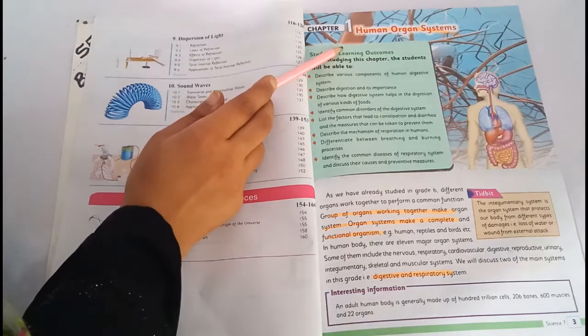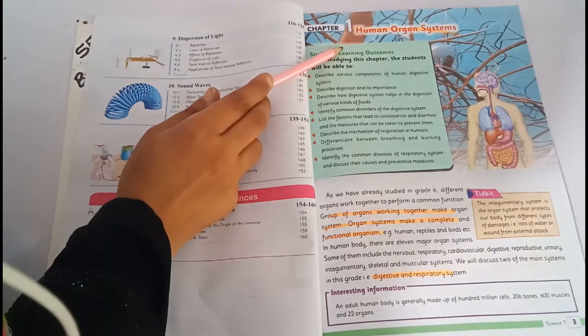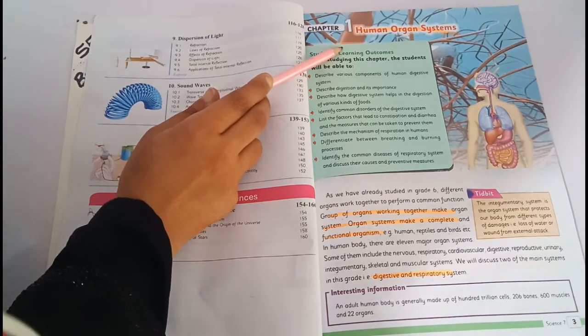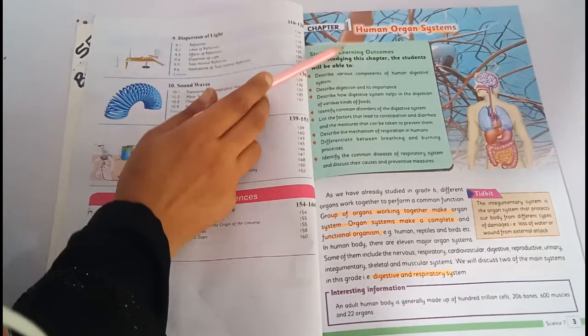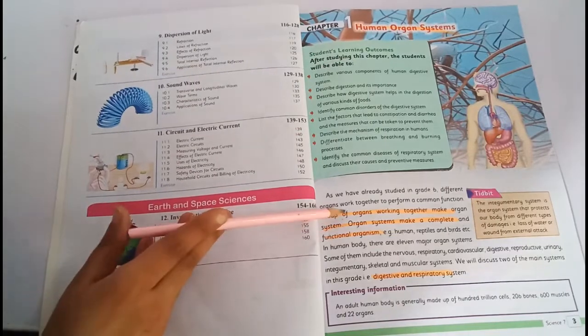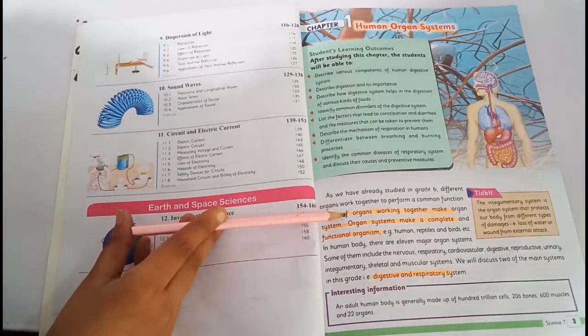In this chapter we will talk about organ systems, how many organ systems are present and how they work. In previous classes, we have studied cells, tissues and organs.